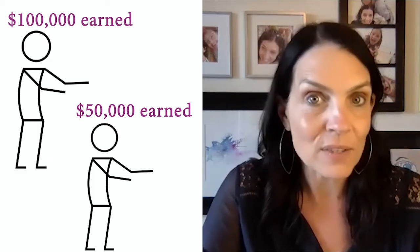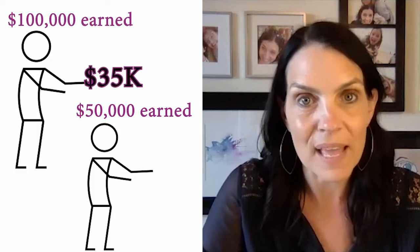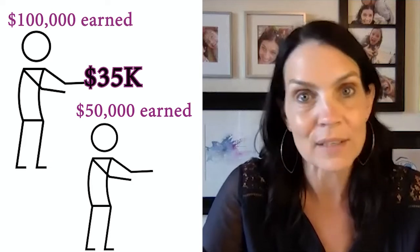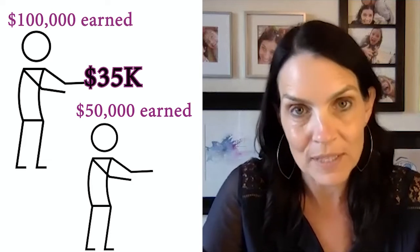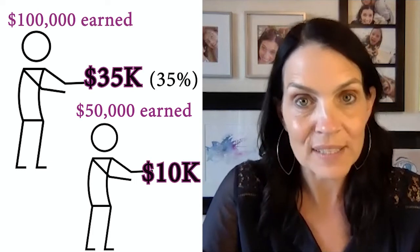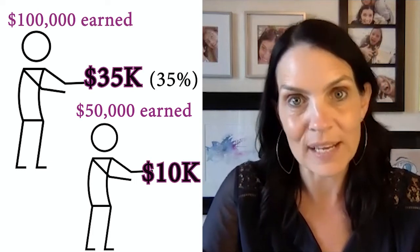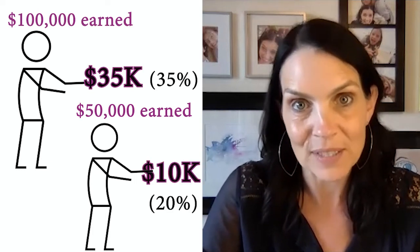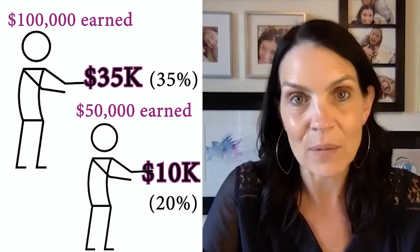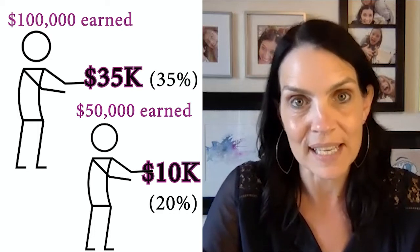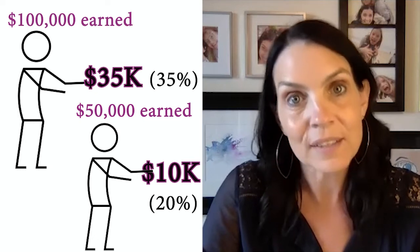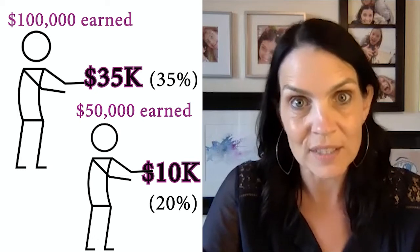Then the other way of implementing vertical equity is what we would consider a progressive tax, where those with more pay more both in terms of dollars and percentages. So our $100,000 taxpayer might pay $35,000 — a rate of 35% — and our $50,000 taxpayer might still pay at a rate of 20%, or $10,000. So that's what we're talking about when we talk about progressive taxation: paying a larger percentage, not just more in dollars.